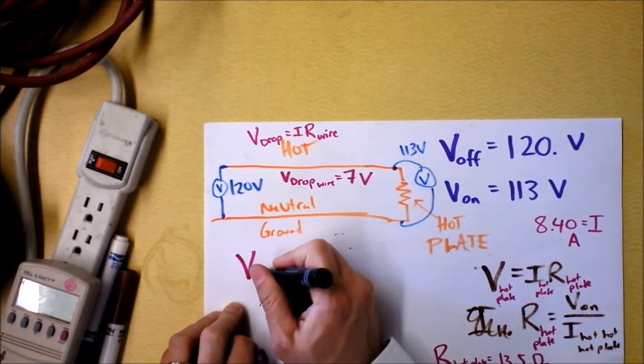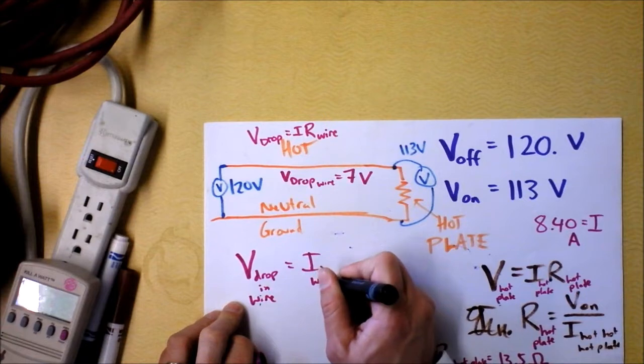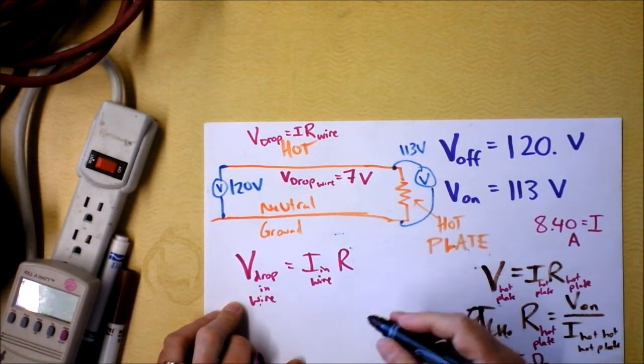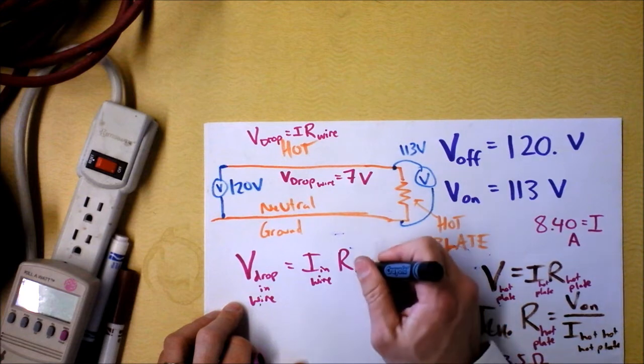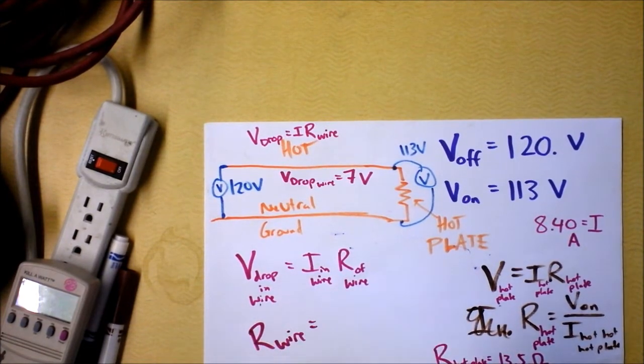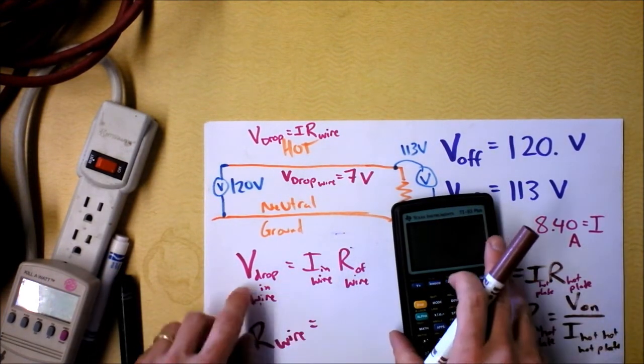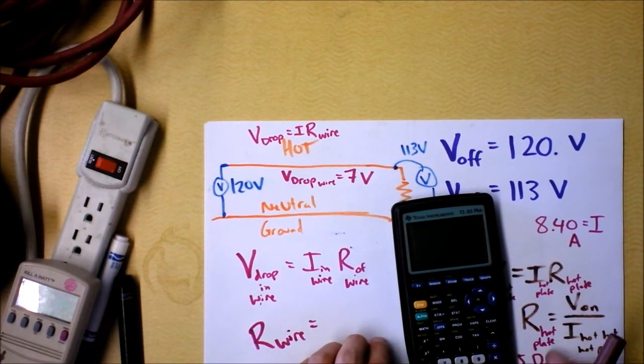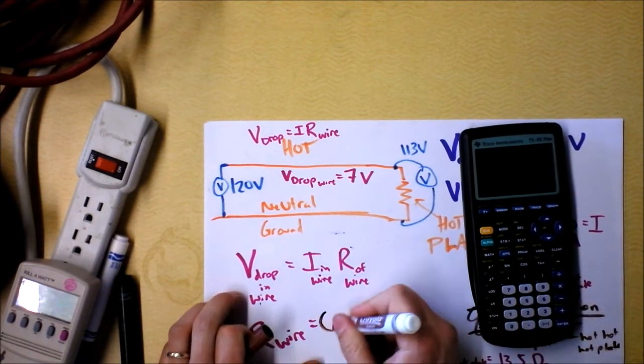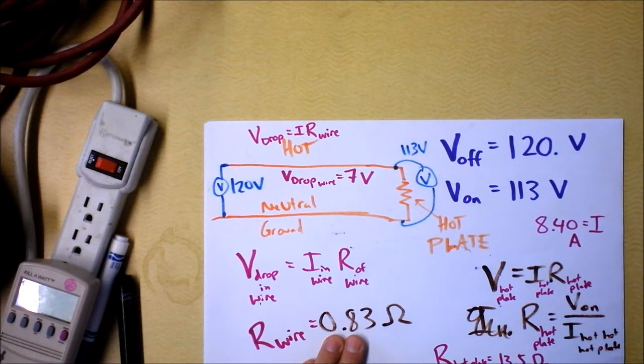Now we can use Ohm's Law and say the voltage drop in the wire is the current in the wire. Remember, that's the same current as the current through the hot plate because of diarrhea, but we're going to take that current and we're going to multiply it, not the resistance of the hot plate, but the resistance of the wire. Now we can find the resistance of the wire. This is the resistance of the service wire that's getting our electricity to us, and we're going to use the voltage drop in the wire, which is 7, and we're going to divide that by the current that's going through the system, and that current is 8.40 amps. I get 0.83 ohms. Thank goodness the resistance in the wire is a lot less than the resistance in the hot plate.